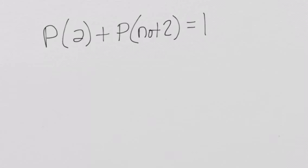And here we have the probability of getting a 2 on a number cube would be 1 out of 6. But what's the probability of getting not a 2? Well, there are 5 numbers out of 6 total that are not a 2.